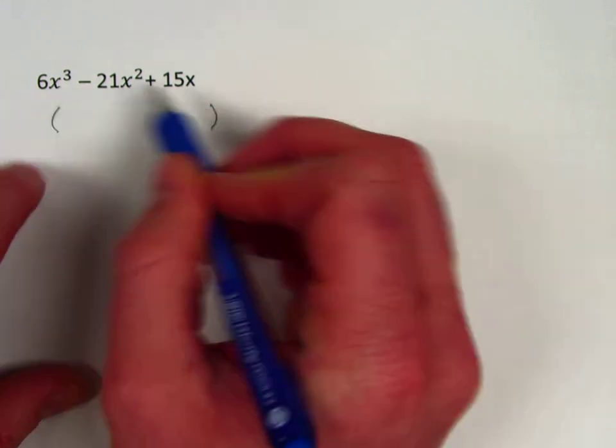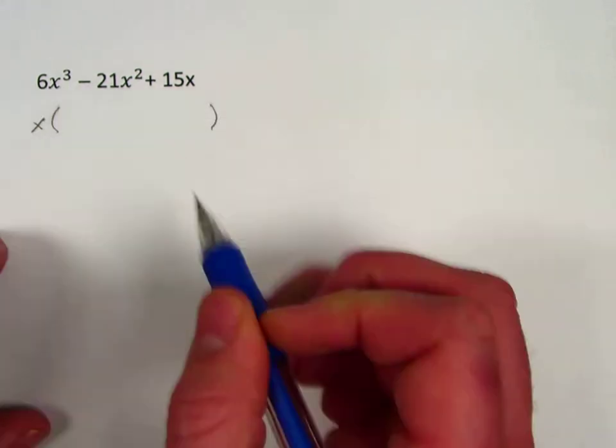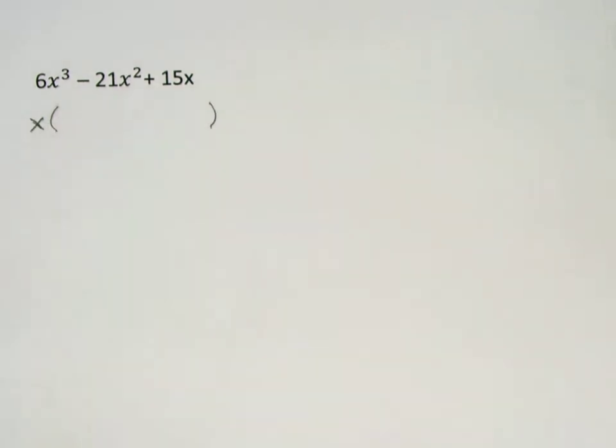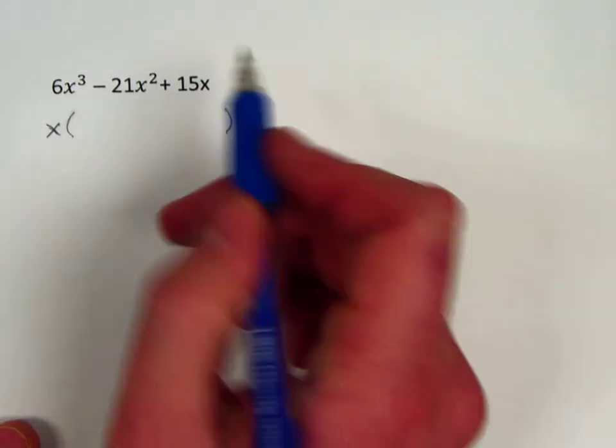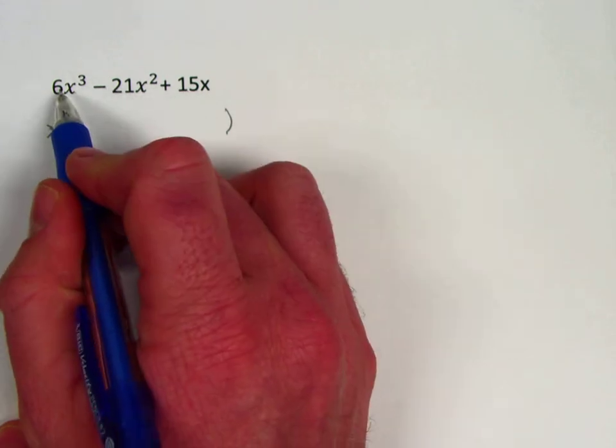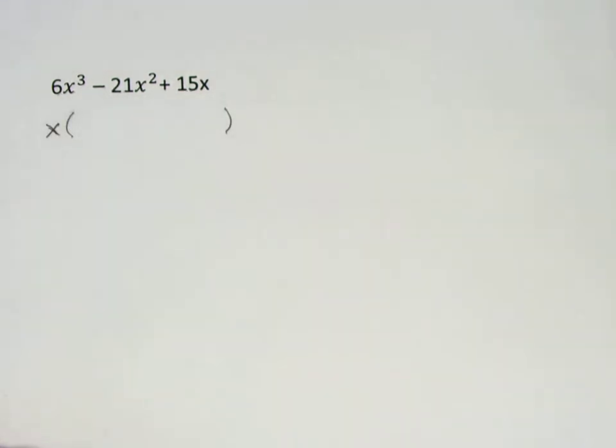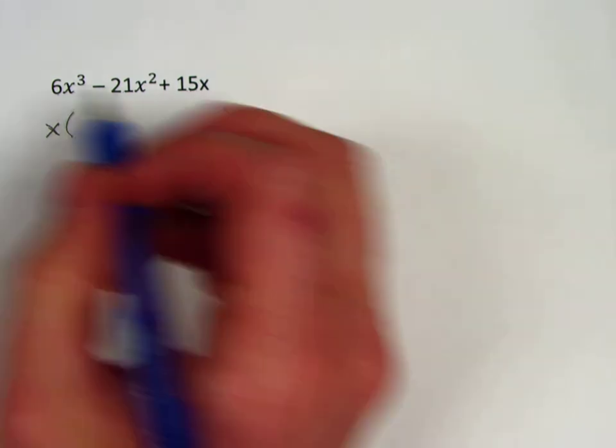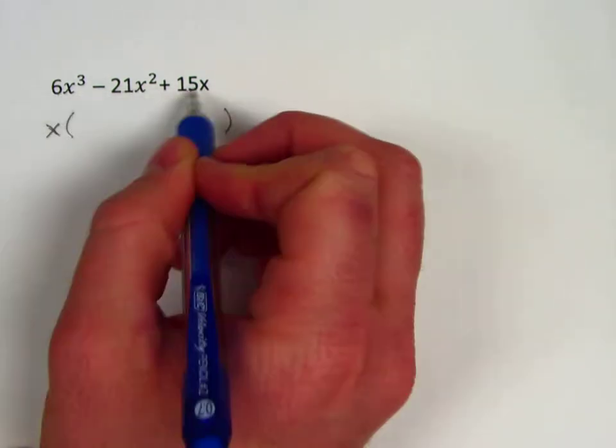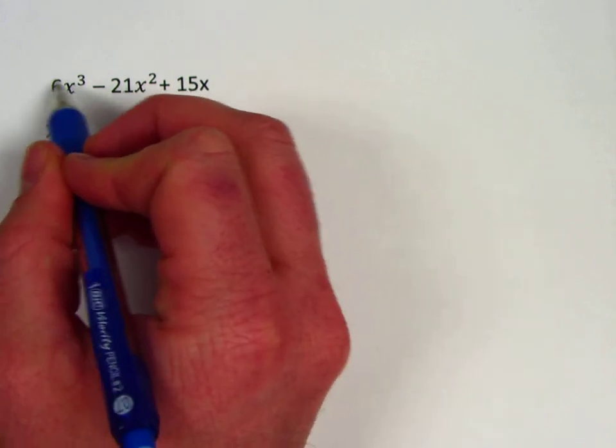So I'm looking for the GCF here, and so I can see that they all have an x in common, so it's okay for an x to be part of my GCF. So I factor that out, and then if I look at the three terms, I also am trying to find the GCF between 6, 21, and 15.